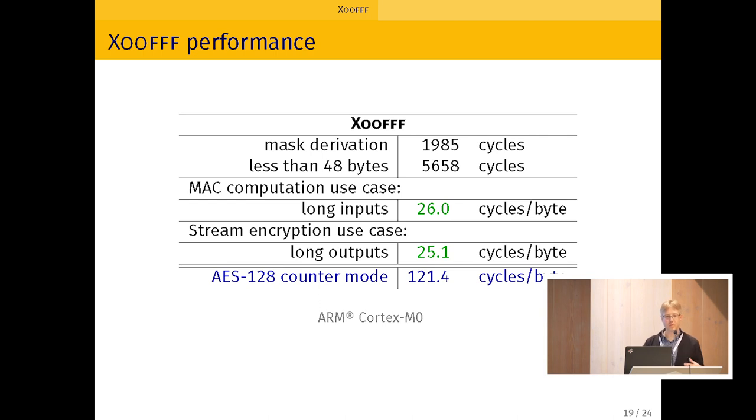So I said our goal was to have some good performance on a wide range of platforms. So let me give you some numbers. So let's start with the ARM Cortex M0. So for long inputs, we can reach 26 cycles per byte and long outputs, similarly 25 cycles per byte. And then as a comparison, the AES-128 in counter mode is about five times slower on that platform. On Cortex M3, which is a bit bigger, we can reach between eight and nine cycles per byte for long inputs and long outputs, compared to about four times slower for the AES.